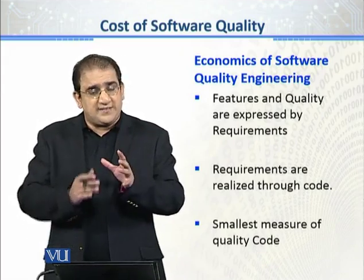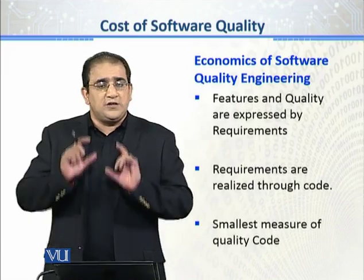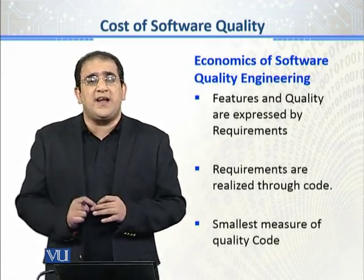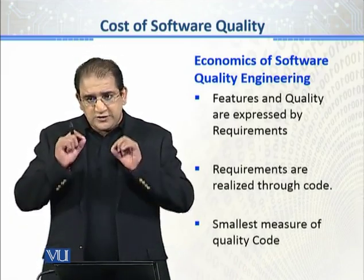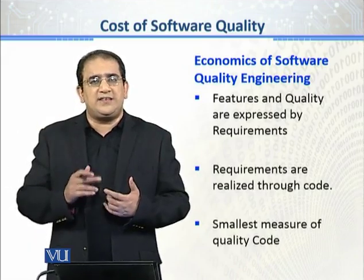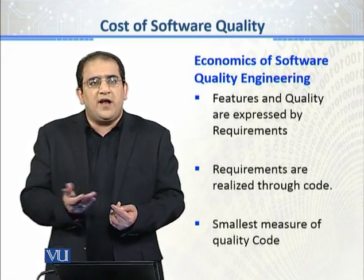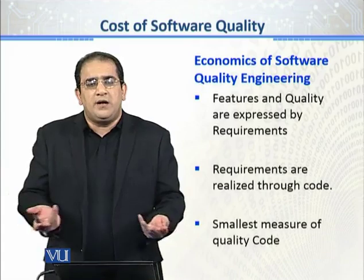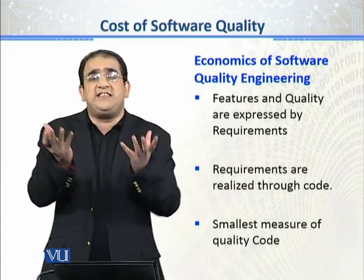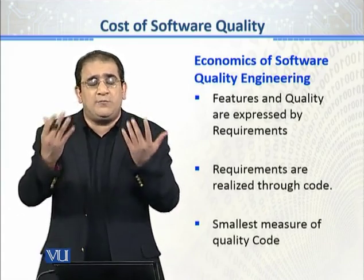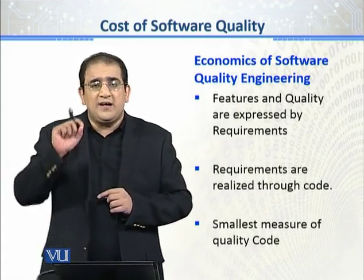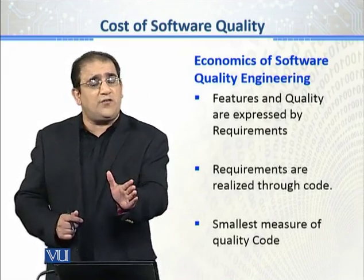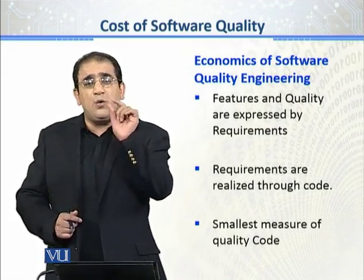The smallest measurable unit — وہ چیز جو مجھے نظر آ رہی ہے، a tangible چیز جس کی output مجھے نظر آ رہی ہے — وہ code ہے۔ That's why psychologically we say code is everything. But when we calculate the economics of software, code is just one thing.